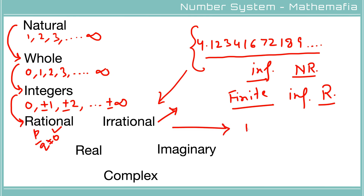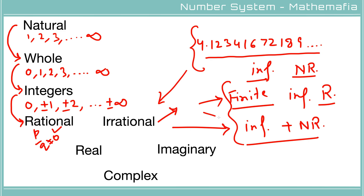A number's decimal portion is either finite, infinite and repeating, or infinite and non-repeating. This means a rational number can never be an irrational number and an irrational number can never be a rational number — they are mutually exclusive. The combination of both rational and irrational numbers is known as real numbers.